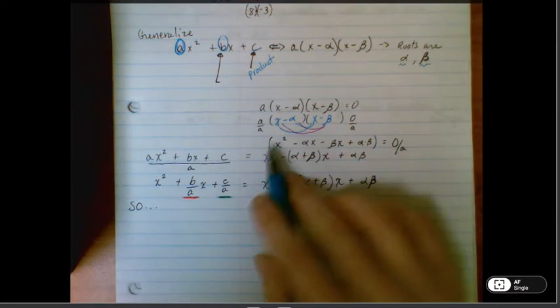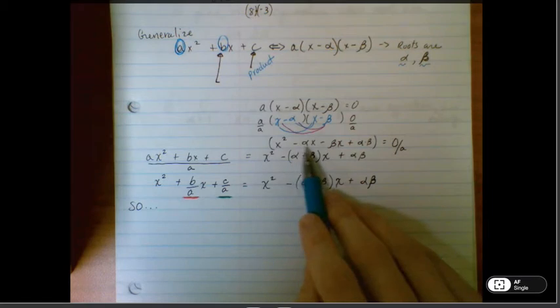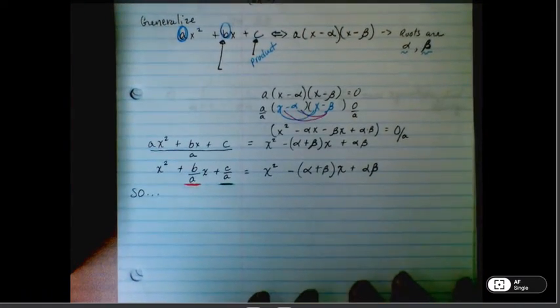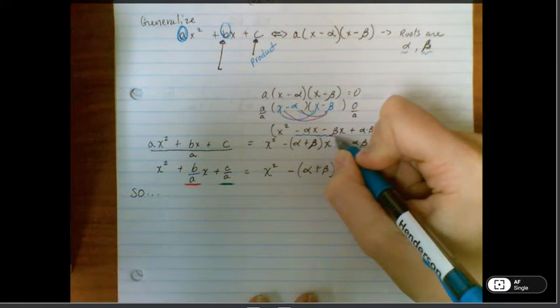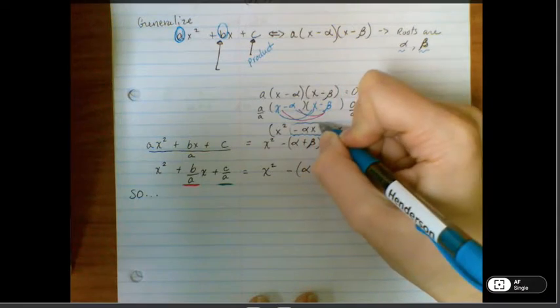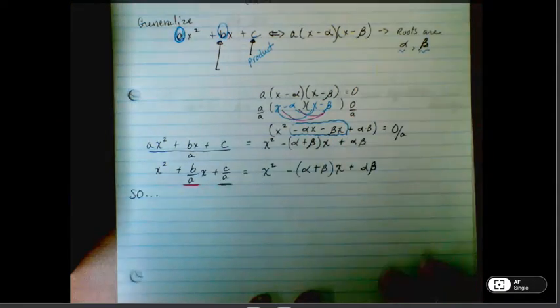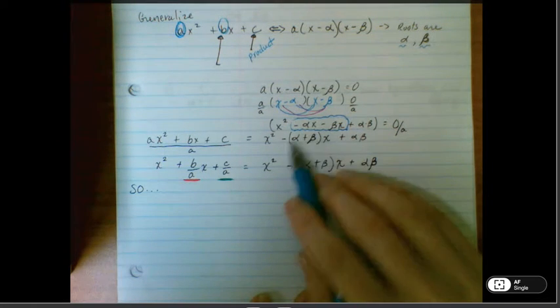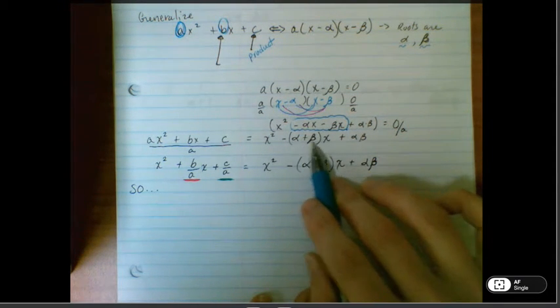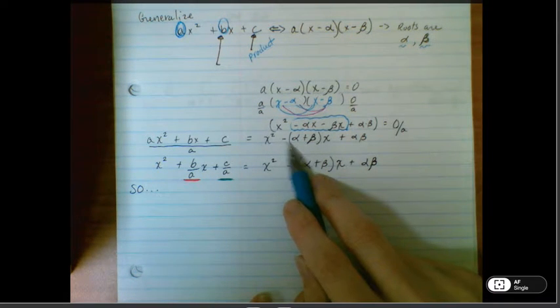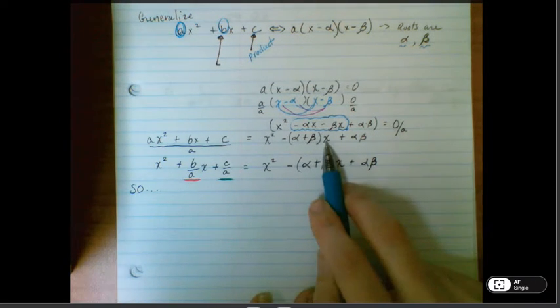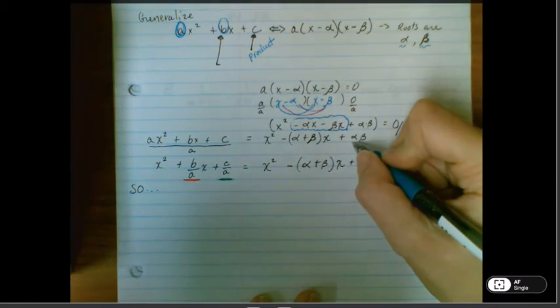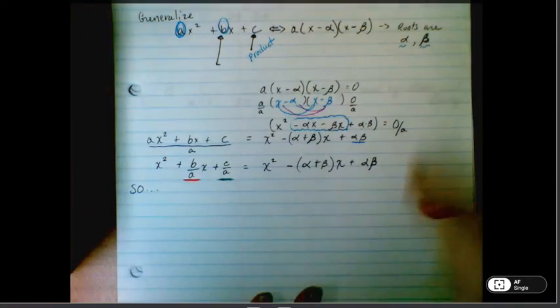So when I simplify this out, I've got x squared minus alpha x minus beta x plus alpha times beta. So this right here would combine to give us our B term. So x squared minus, we're going to pull out the minus here, and then we have alpha plus beta. So if you were to redistribute that, you would have minus alpha minus beta, and then you'd multiply the x in also, minus alpha x minus beta x, and then we have our last term, which is just the two roots multiplied together.